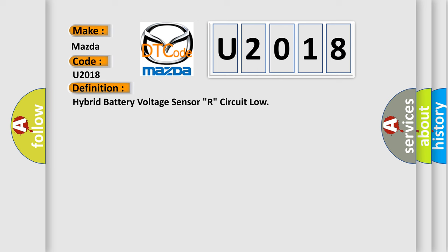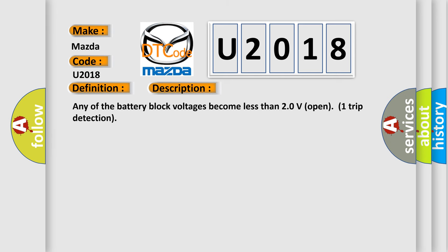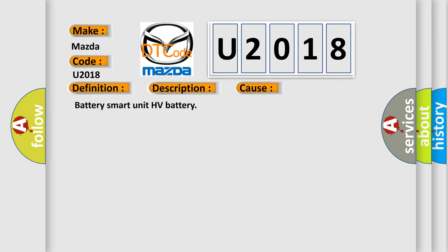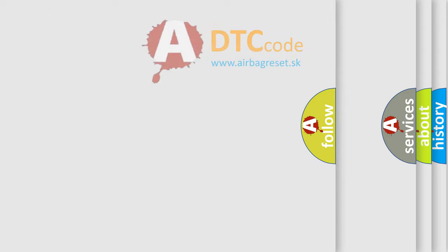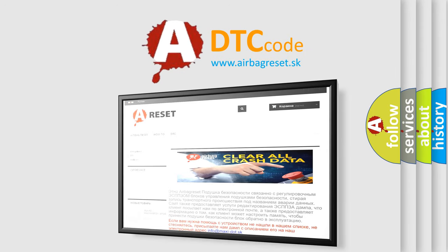The basic definition is: Hybrid battery voltage sensor R circuit low. Any of the battery block voltages become less than 20 volts — one trip detection. This diagnostic error occurs most often in these cases: Battery Smart Unit, HV Battery. The Airbag Reset website aims to provide information in 52 languages. Thank you for your attention and stay tuned for the next video.